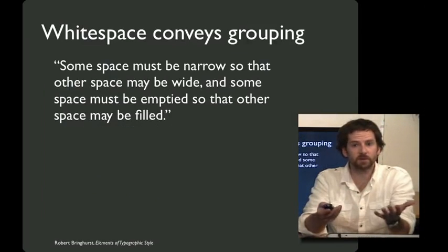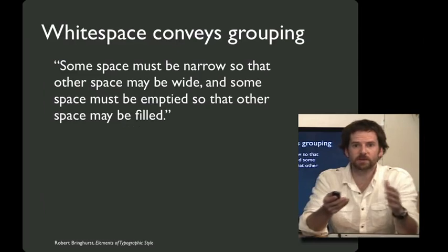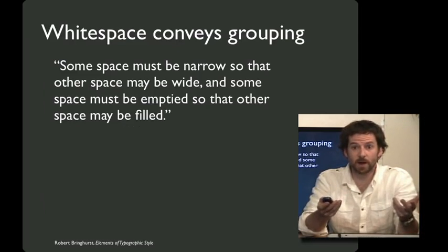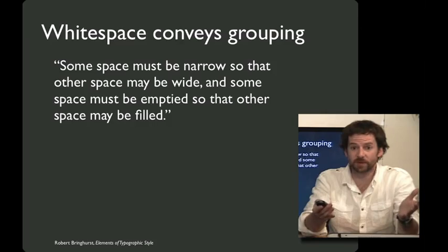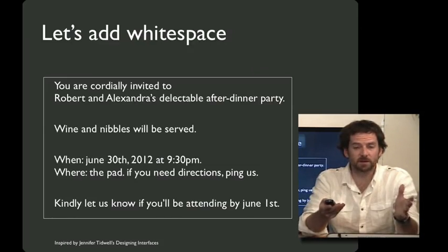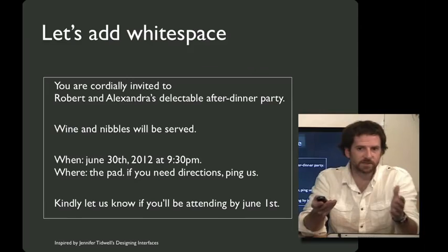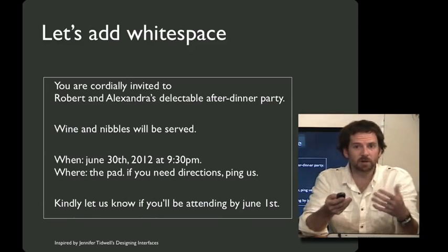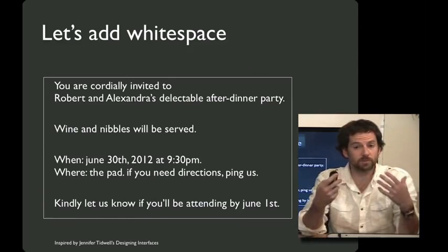One thing that we could do is to introduce some white space into the design. And as Robert Bringhurst writes, with white space, some space must be narrow so that other space must be wide, and some space must be emptied so that other space may be filled. So let's empty out some spaces and fill up some others. By adding a little white space, we're able to chunk the visual design so that the salient bits are grouped together, and different bits are further apart.